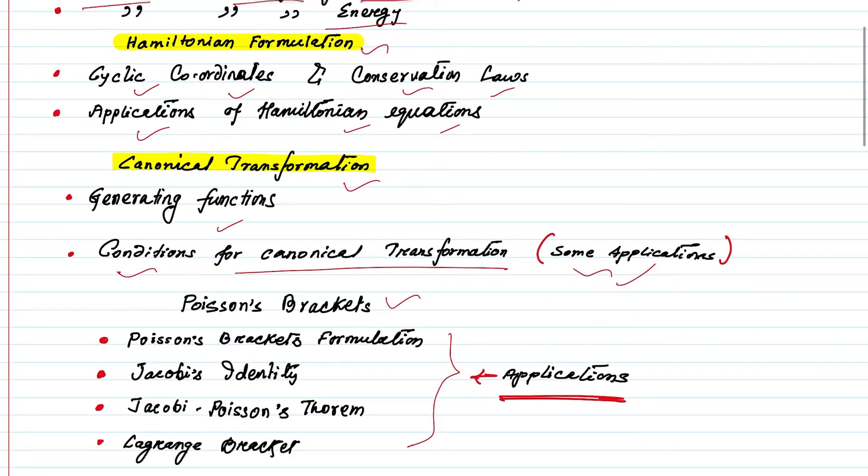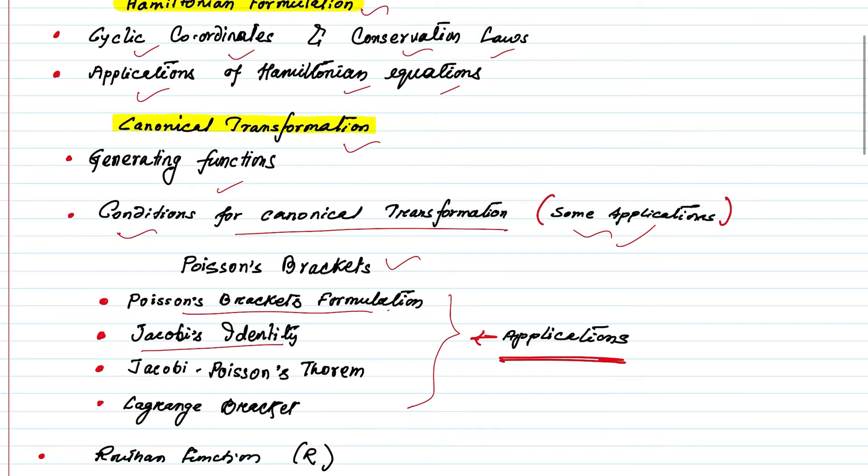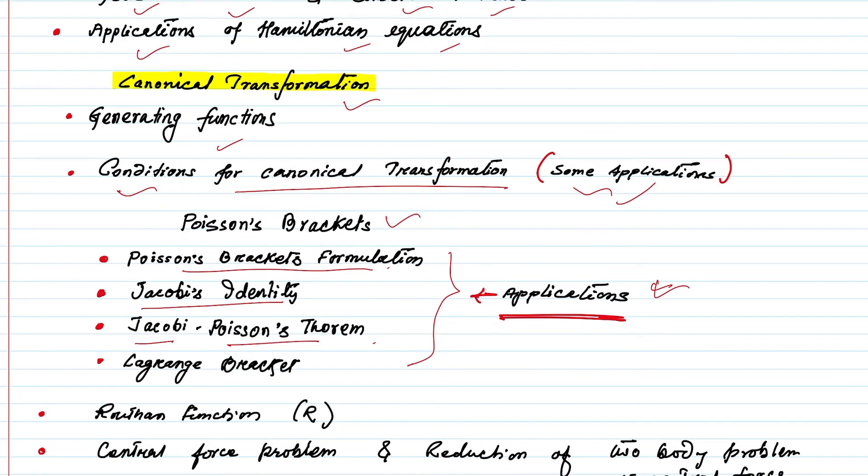Poisson brackets, Poisson formulation, Jacoby identity, Jacoby's identity and Jacoby Poisson's theorem and their application also important here. I am going to help you to solve problems also and Lagrange bracket.